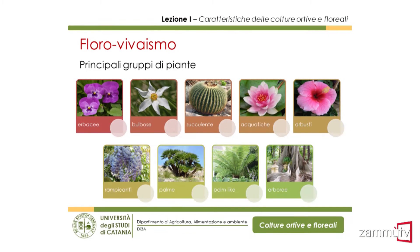Nel florovivaismo abbiamo tantissime tipologie di piante che sono i 'mattoncini' con cui si realizza un giardino: piante erbacee, bulbose, succulente, piante acquatiche, arbusti, rampicanti, palme, piante esotiche 'palm like', e poi il gruppo delle arboree.